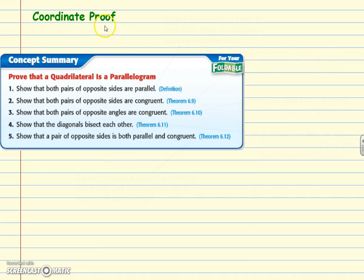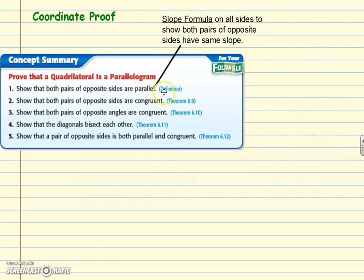Now we'll get into coordinate proofs — using a coordinate grid to prove things. It's not as formal as two-column proofs. You can prove a quadrilateral is a parallelogram by showing both pairs of opposite sides are parallel, which is the definition. Write this down if you don't have it in your theorem book: a parallelogram is a quadrilateral with both pairs of opposite sides parallel. You can use the slope formula — if both pairs of opposite sides have the same slope, they're parallel.